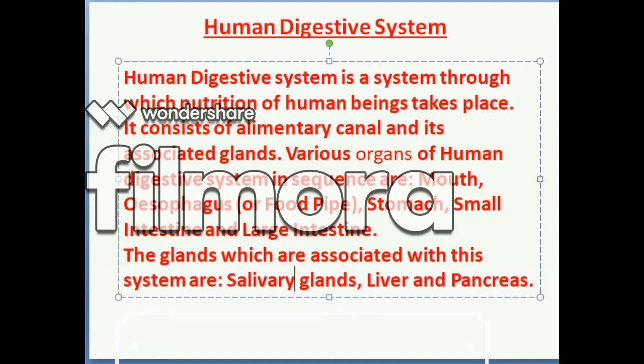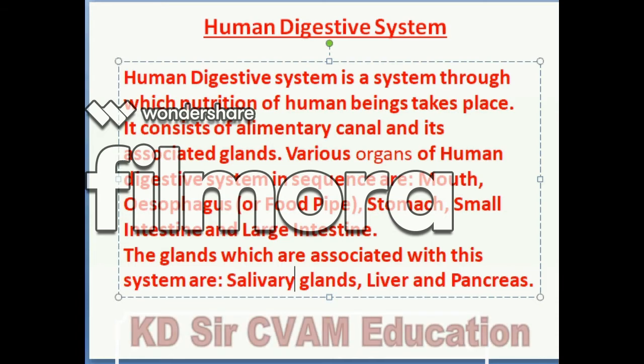The human digestive system is a system through which nutrition of human beings takes place. It consists of the alimentary canal and its associated glands. The various organs of the human digestive system in sequence are: mouth, esophagus, stomach, small intestine, and large intestine.